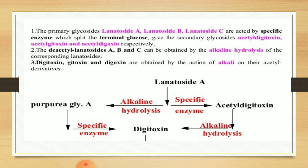Then purpureaglycoside A, treated with a specific enzyme, forms digitoxin. So in summary, there are two pathways from lanatoside A. On the left side: lanatoside A after alkaline hydrolysis (removal of acetyl group) forms purpureaglycoside A, which after a specific enzyme (removal of glucose) forms digitoxin. On the right side: lanatoside A treated with a specific enzyme removes the glucose to form acetyl-digitoxin, and this acetyl-digitoxin after alkaline hydrolysis (removal of acetyl group) also forms digitoxin.